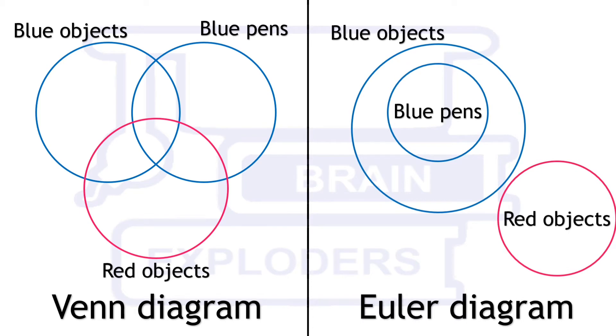If we draw an Euler diagram for the same case, then it will be something like this. All blue pens are blue objects, therefore it lies completely inside blue objects, and in this diagram there is no intersection between red and blue.